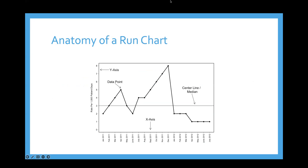If we look at a run chart, just to remind everyone, what we are depicting is essentially a line chart depicting our outcome of interest. Here we have the rate of an infection per a thousand patient days. Our data points are going to be on this thick line, and then our center line or median is going to be the line by which we evaluate our process control rules. The purpose of a statistical process control chart is to try and detect what's known as special cause variation.